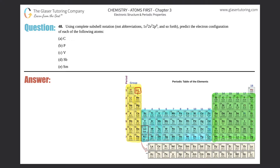Problem 48: using complete subshell notation — not abbreviations, so 1s2, 2s2, 2p6, and so forth — predict the electron configuration of each of the following atoms, parts a through e. I've already done two problems that go into depth about how to set up the periodic table for electron configuration.